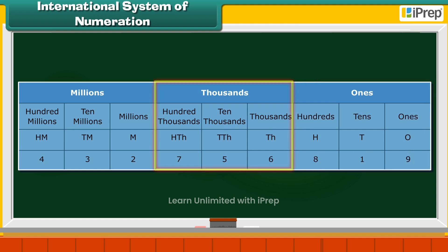Similarly, the Thousands group has three digits: 6, 5 and 7. Their places are Thousands, Ten Thousands and Hundred Thousands.